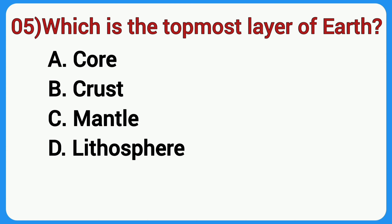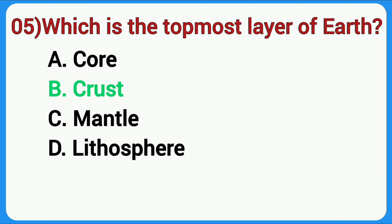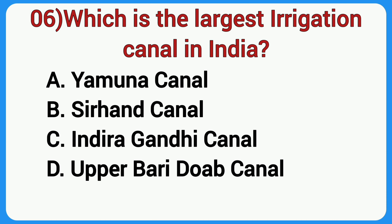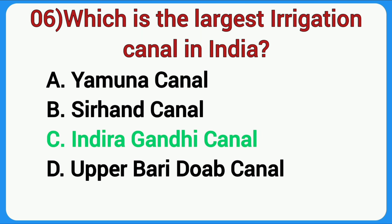Which is the topmost layer of the earth? Answer is Crust. Which is the largest irrigation canal in India? Answer is Indira Gandhi Canal.